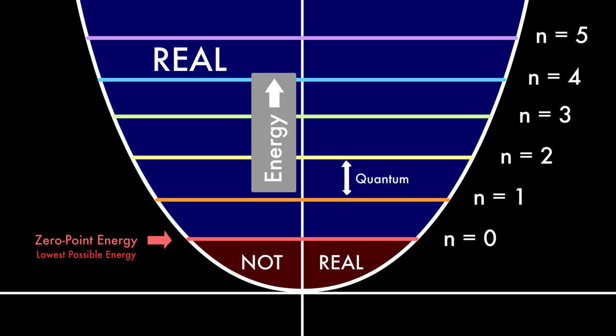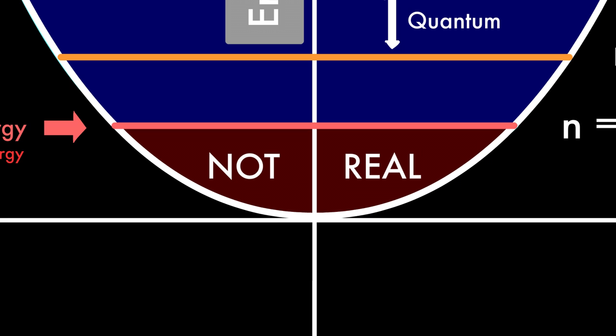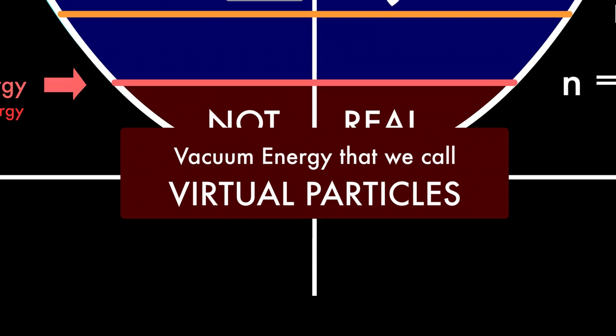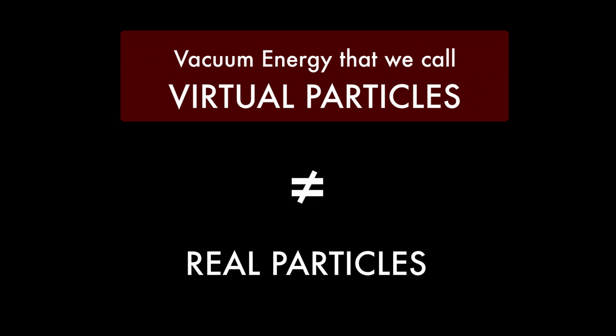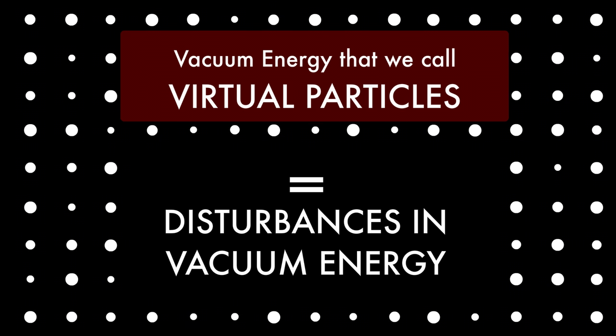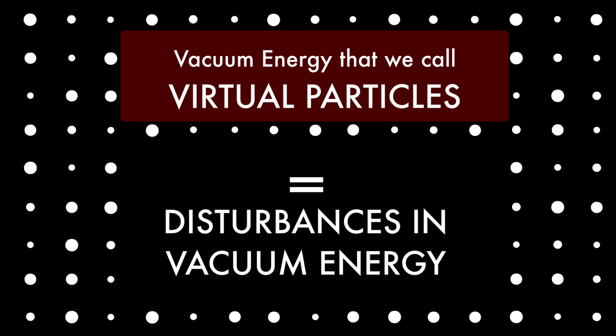The energy lower than the zero point energy is so low that it cannot exist in real particles. Everything in this area below the zero point is actually just disturbance in the vacuum energy that can push the vacuum energy described earlier over the zero point energy.